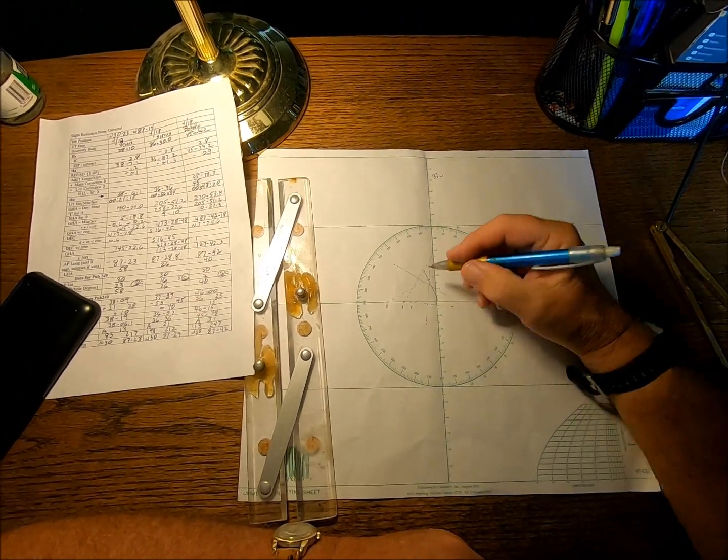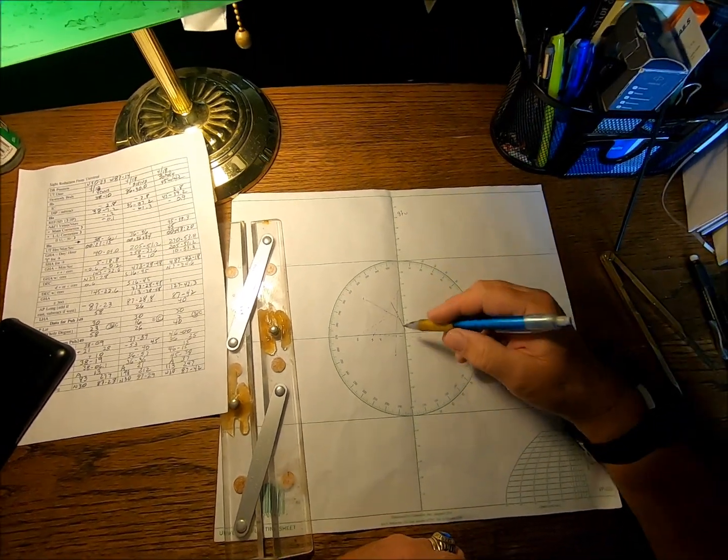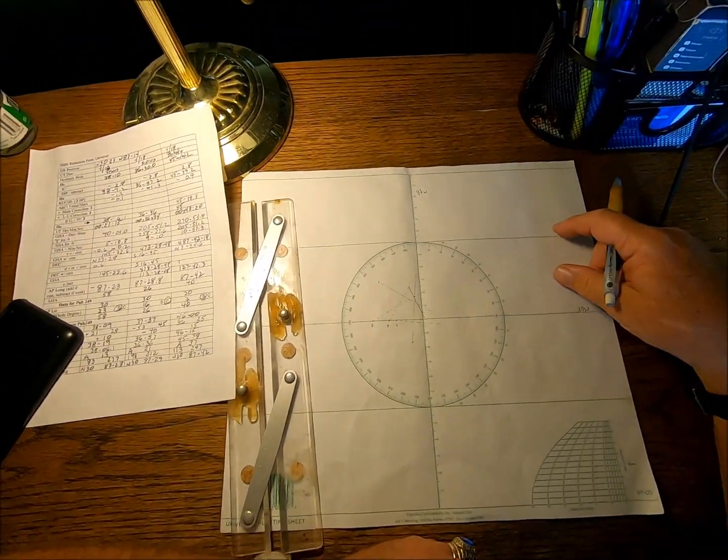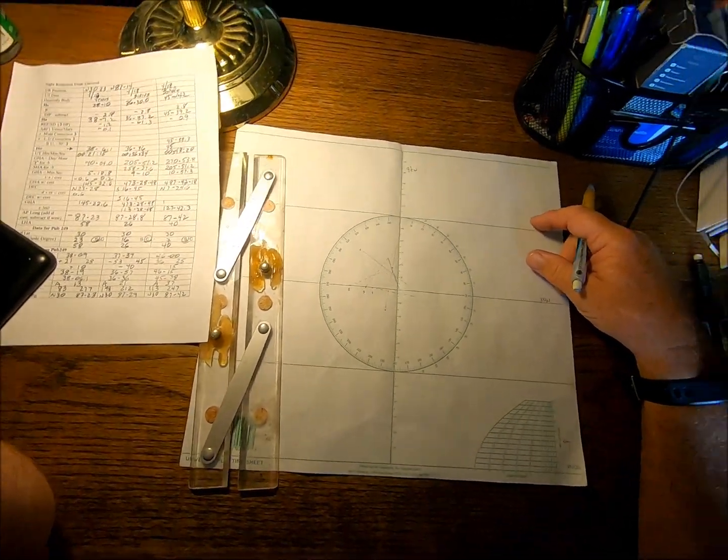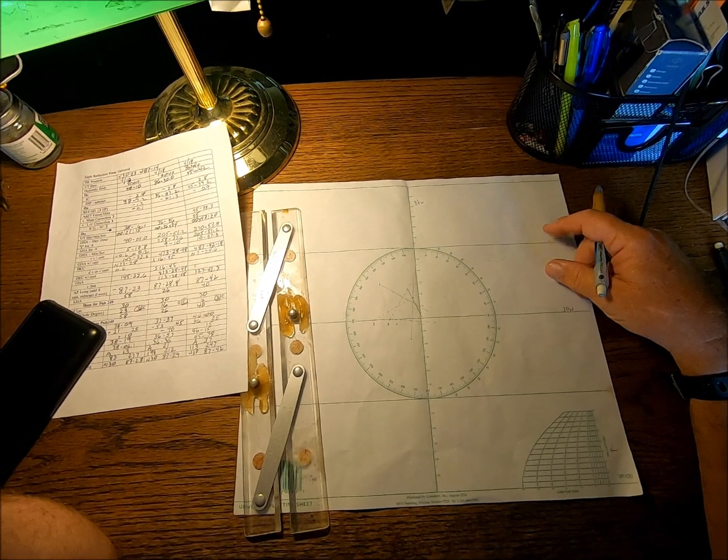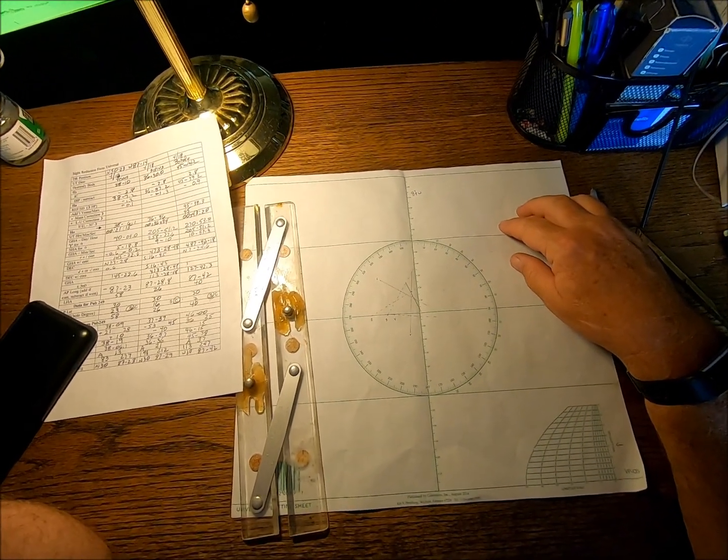Anyway, that's how you do it. Now, you will take this latitude longitude and you will transfer it over to your ocean chart and start a new dead reckoning track.